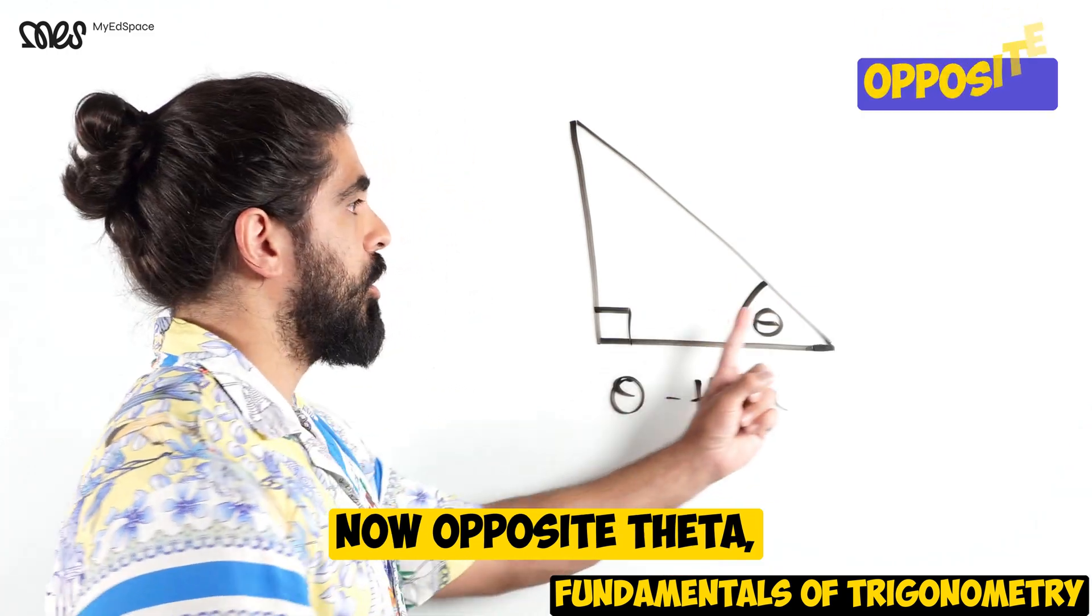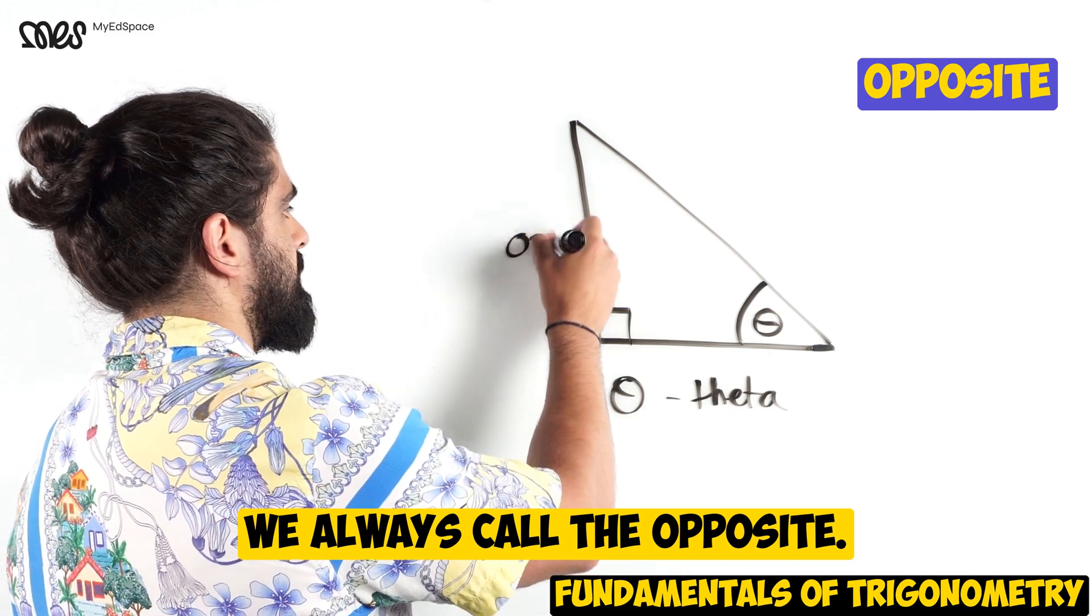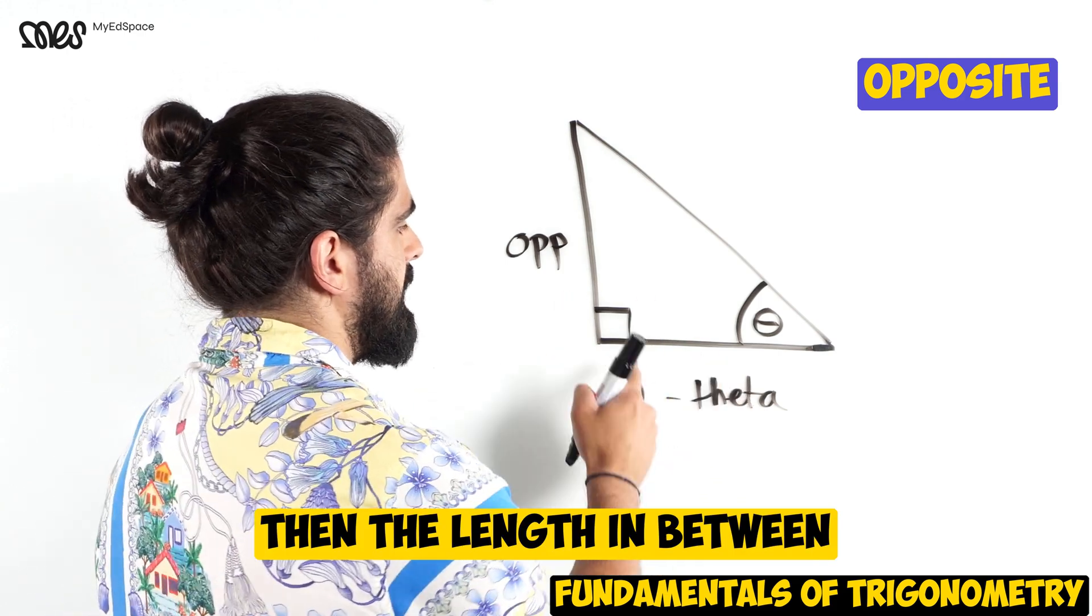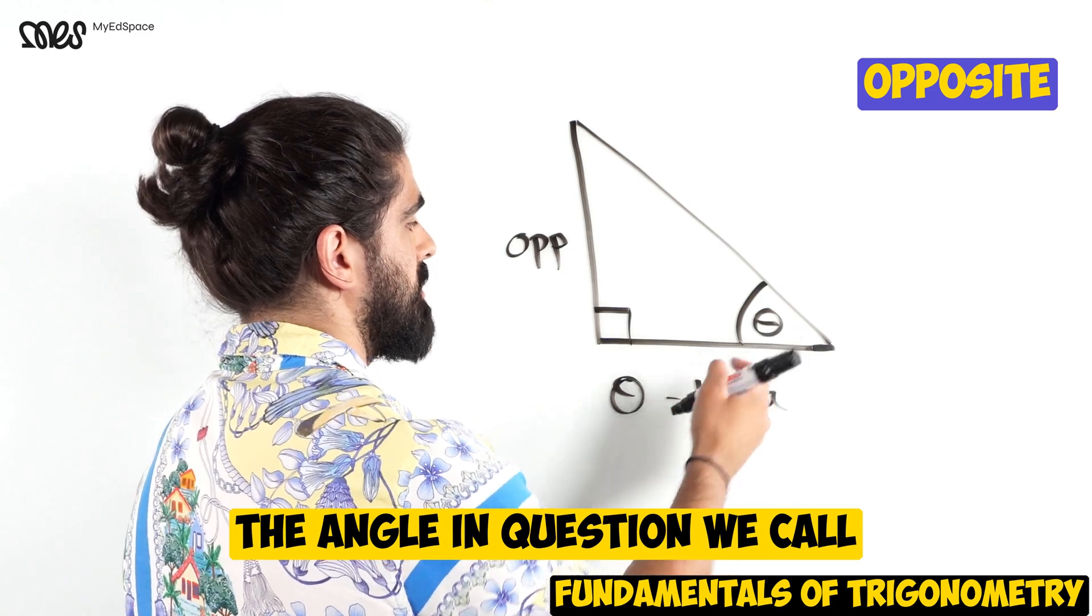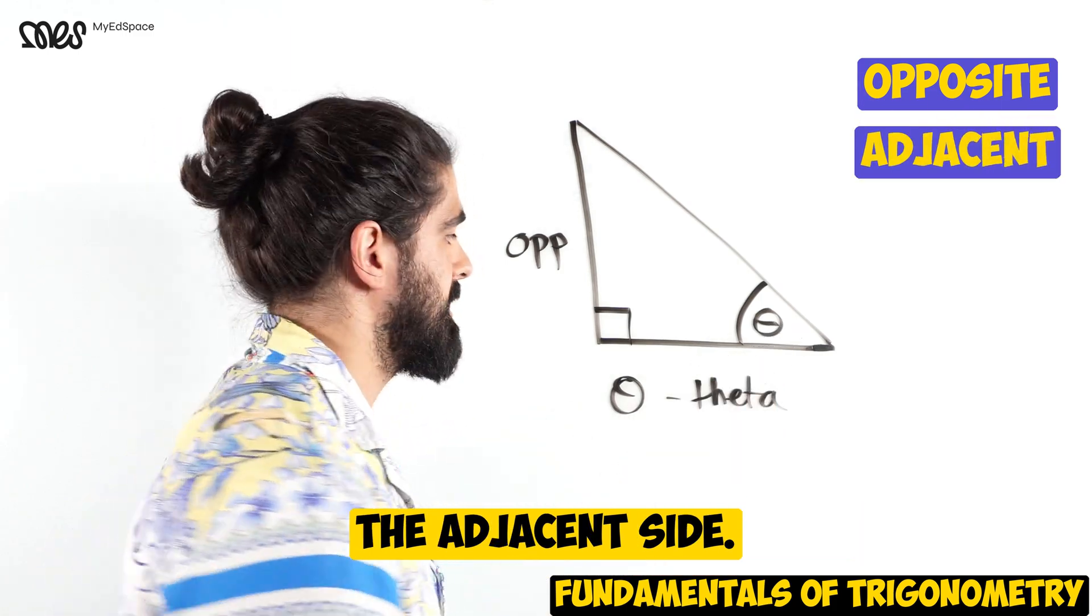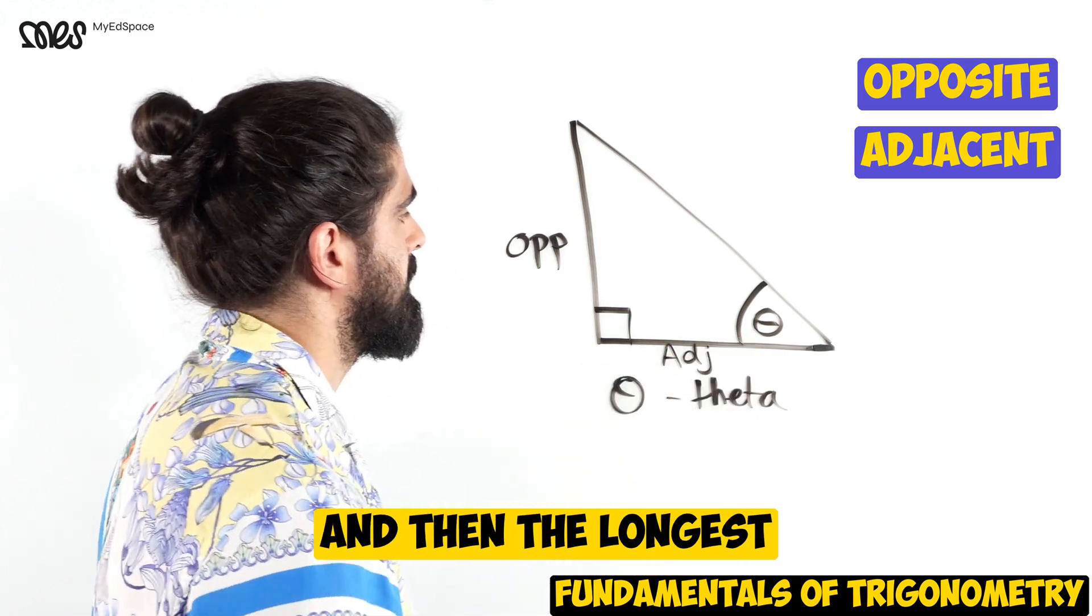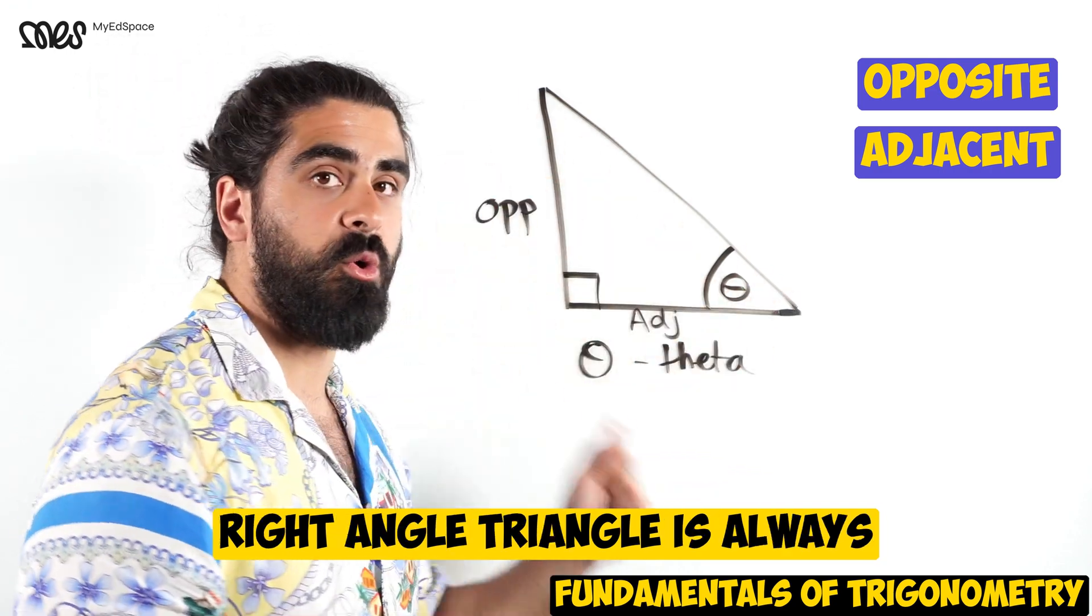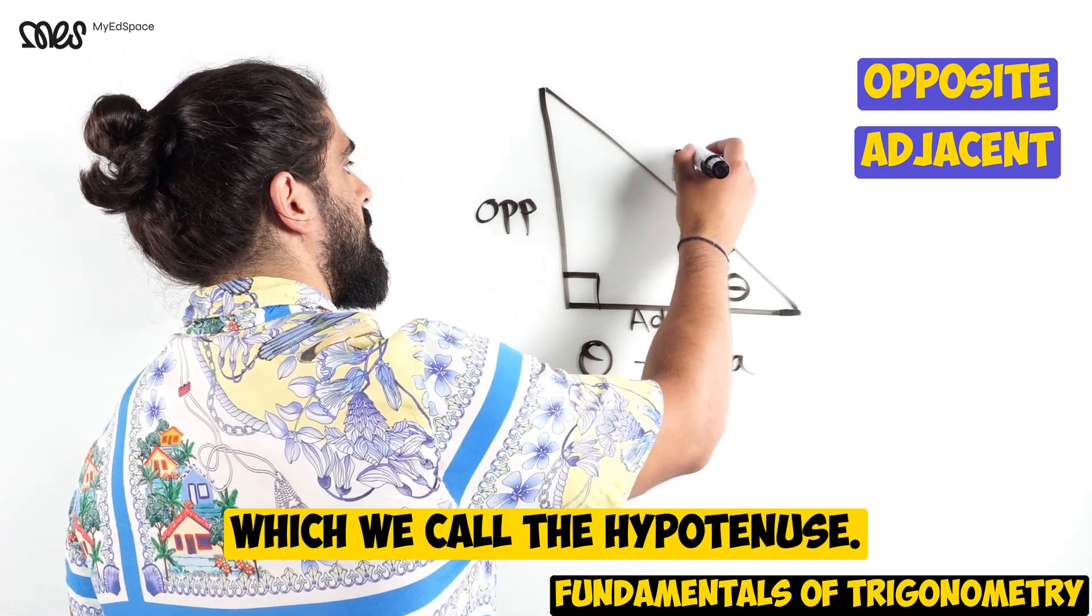Opposite theta, the opposite length we always call the opposite. Nice and simple. Then the length in between the right angle and the angle in question we call the adjacent side. Then the longest length in our right angle triangle is always the length that is opposite the right angle which we call the hypotenuse.